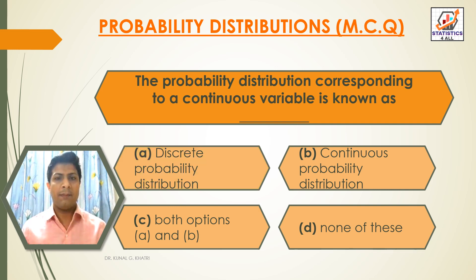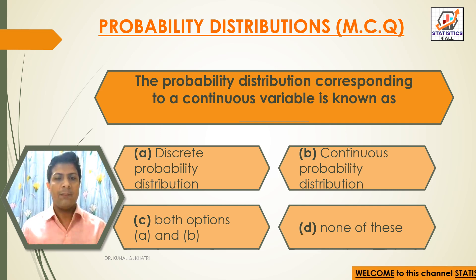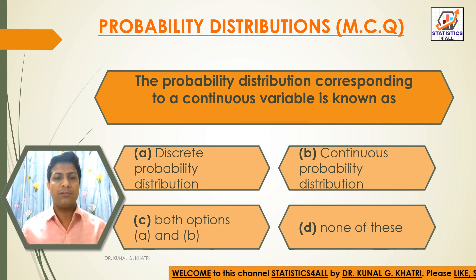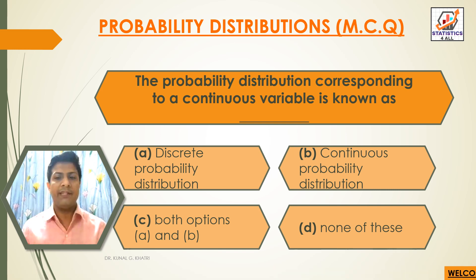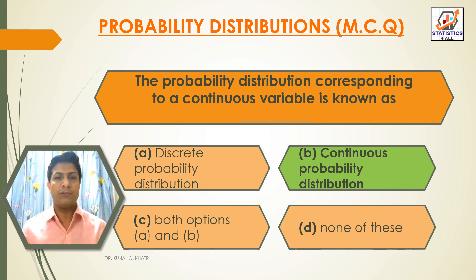Next question: the probability distribution corresponding to a continuous variable is known as. Option A: discrete probability distribution. Option B: continuous probability distribution. Option C: both options A and B. Option D: none of these. The answer is option B, continuous probability distribution.